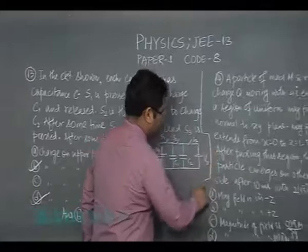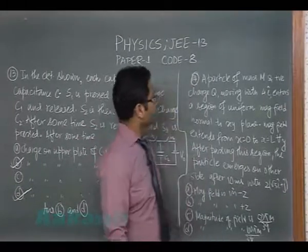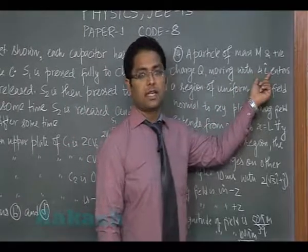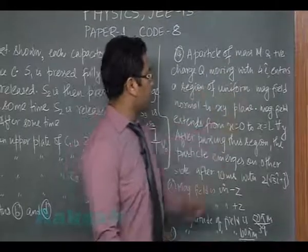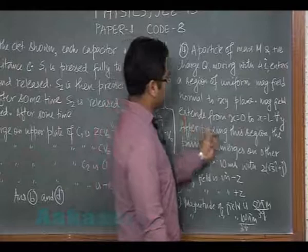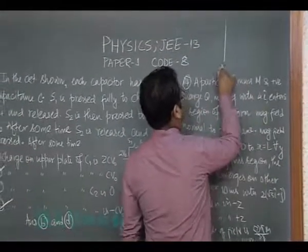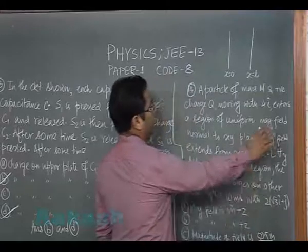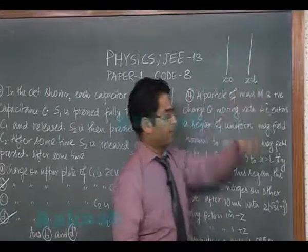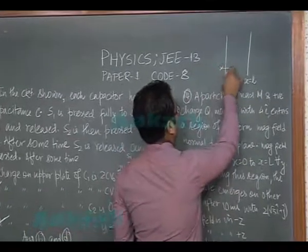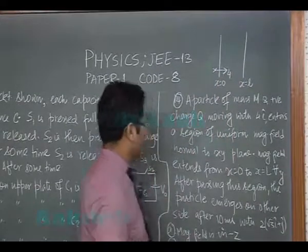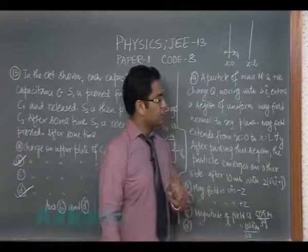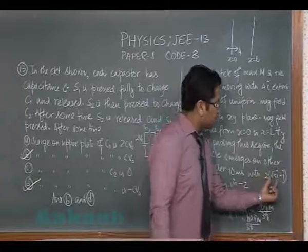Let's go to question number 14, which is from magnetism. A particle of mass m and positive charge q is moving with 4 i cap, that's a velocity, initial velocity 4 along x, enters a region of uniform magnetic field normal to xy plane. The magnetic field extends from x equals 0 to x equals l and for all value of y. That means the magnetic field is either inside or outside. Initial velocity is in this direction and that's 4 meter per second.